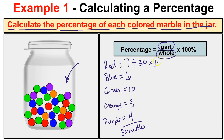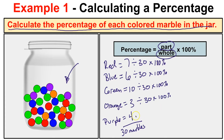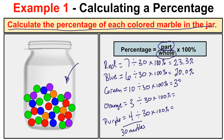We'll take seven divided by 30 times 100 percent, six divided by 30 times 100 percent, 10 divided by 30 times 100 percent, three divided by 30 times 100 percent, and four divided by 30 times 100 percent. Rounding to the tenths place, we'll see that 23.3 percent are red, 20.0 percent are blue, 33.3 percent are green, 10.0 percent are orange, and 13.3 percent are purple.